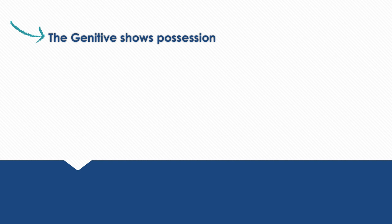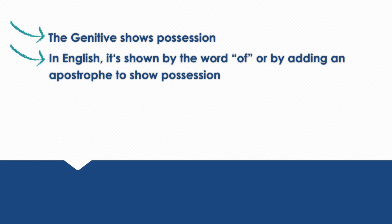Today we're going to be taking a look at the genitive case using indefinite articles. We already learned that the genitive case shows possession. In English it's shown by the word 'of' or by adding an apostrophe to show possession. Let's take a look at some examples.